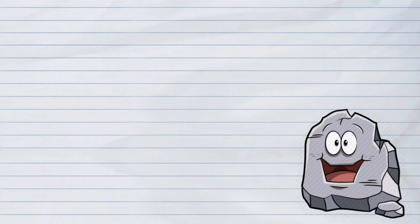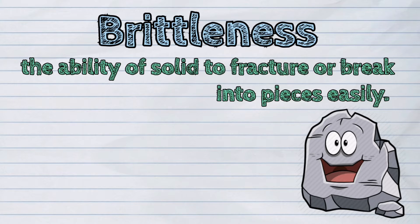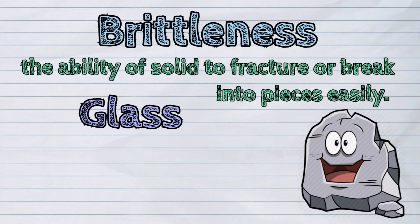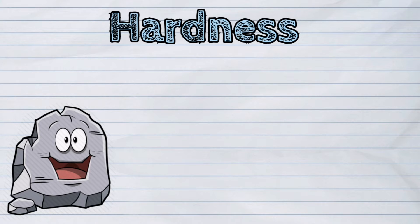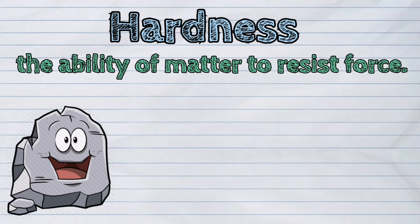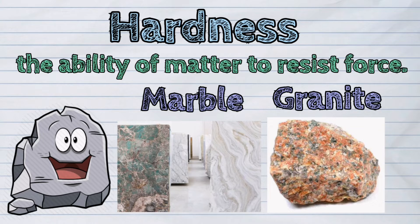Next is brittleness. It is the ability of a solid to fracture or break into pieces easily. The best example of this is glass. Another property of solids is hardness. It is the ability of matter to resist force. Rocks, such as marble and granite, exhibit hardness.